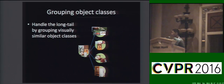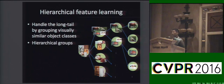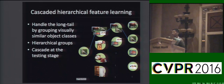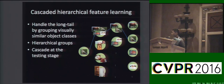Such grouping of object classes can be done in a hierarchical way. At the testing stage, we can also use this hierarchical structure to save computation. For example, given the bounding box of a bird, we can first reject that it is not an instrument or a ball, but it is an animal, and by going through the hierarchical structure, we will find that it is a bird.